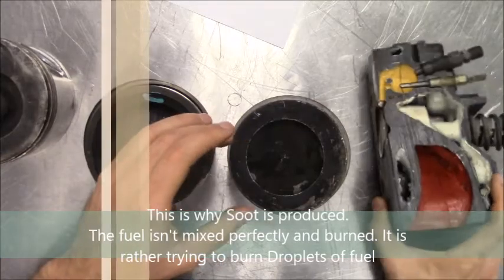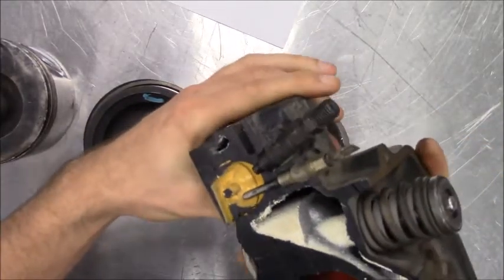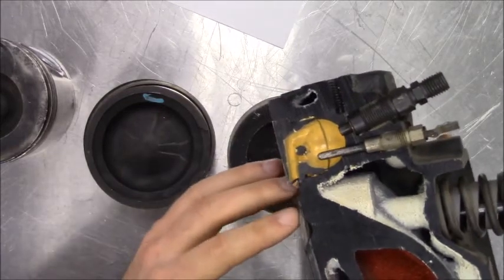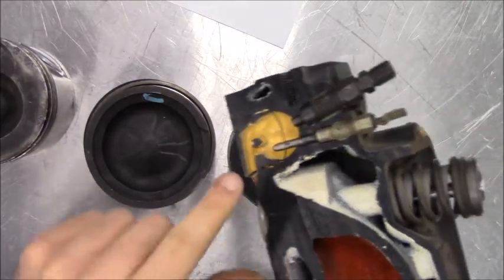Also, I have here a cutout. This is just for reference. Some people don't know what an IDI diesel is. They typically have a flat-top piston with a tiny bowl about the size of your finger and it typically lines up with this pre-combustion chamber.